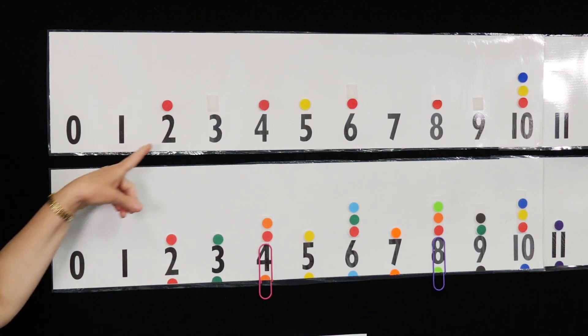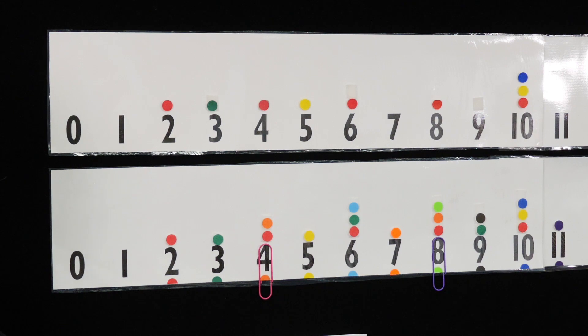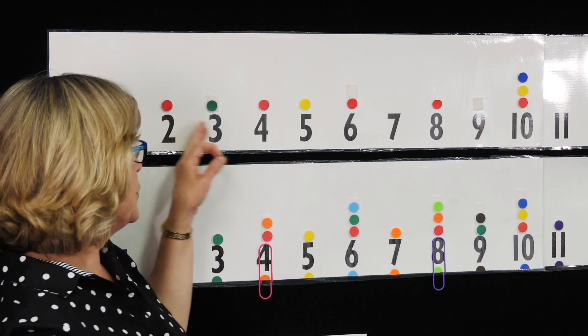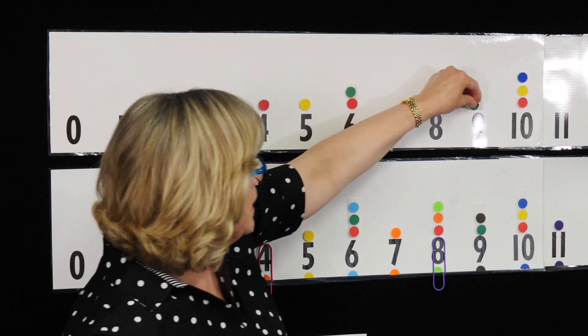The new multiple for 2nd grade would be multiples of 3. They would reinforce 2s, 5s, and 10s and be introduced to the new multiple of 3s.